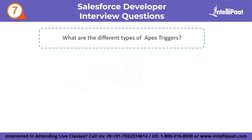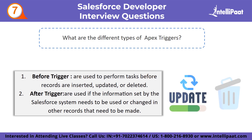Seventh question: what are the different types of Apex triggers? Triggers are split into two main types: before trigger and after trigger. Before triggers run before a record has been saved into the database, which is optimally used for same-record calculations and validation. After triggers run after the record has been saved and should ideally be used for working on records other than the one invoking the trigger.